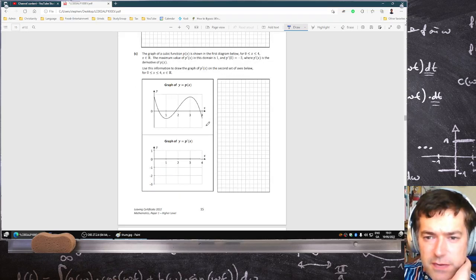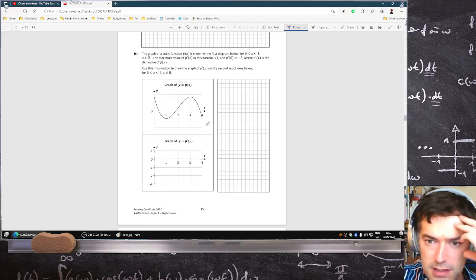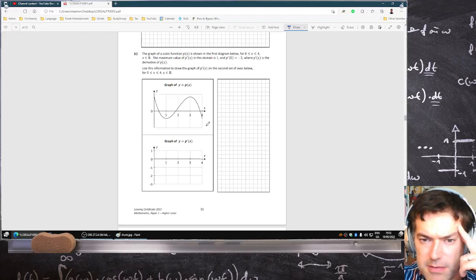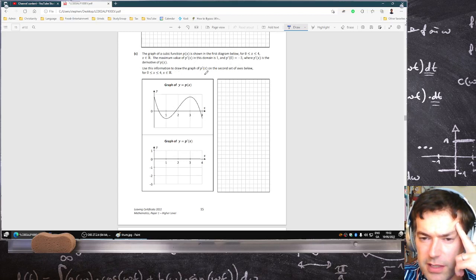The graph of the cubic function is shown below, the maximum value of the derivative in the domain is one, the maximum value of p derivative is one, and p dash zero is minus three. Use this information to draw the graph of p dash s on the second set of axes below.